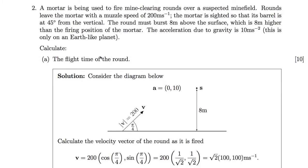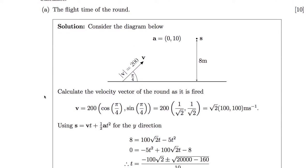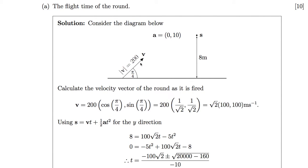Question 2. We have a mortar being fired. Rounds leave the mortar with a muzzle speed of 200 metres per second. The mortar barrel is 45 degrees from the vertical and the round must burst 8 metres above the surface. The easiest way to attack this question is to draw a diagram. We have a velocity vector V representing the mortar direction, 45 degrees from the horizontal, or pi over 4 radians. The muzzle velocity magnitude is 200. The acceleration is zero in the x-direction and 10 in the y-direction (Earth-like planet). The target point is 8 metres above the surface.